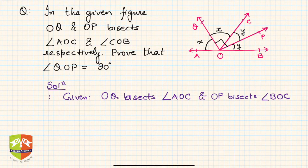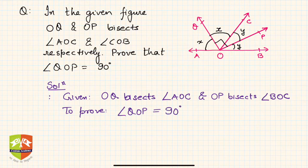Next, state what you need to prove: angle QOP equals 90 degrees. This is the objective. Now let's start the proof.